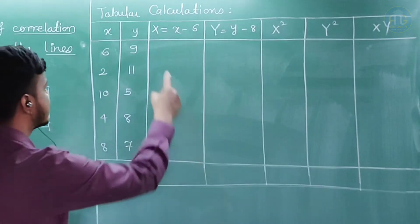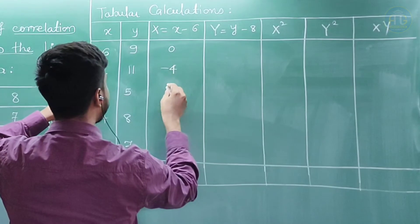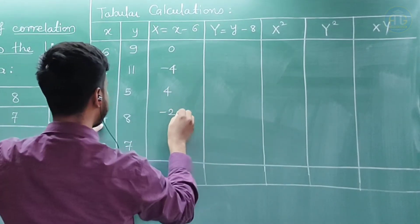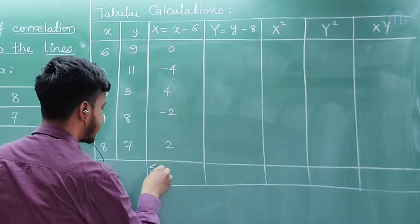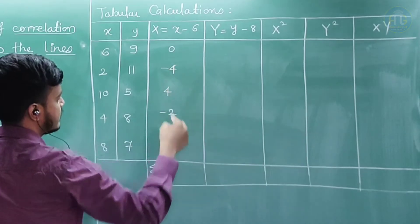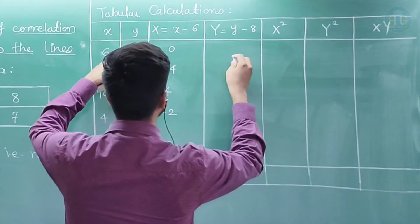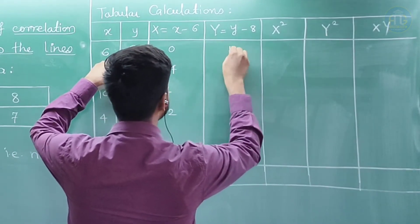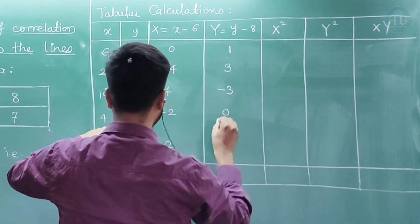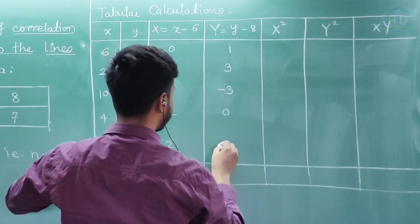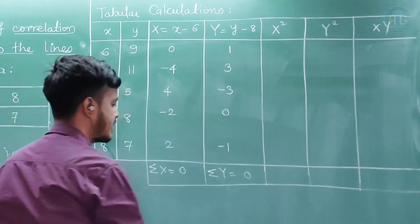Now computing X = x minus 6: 6 minus 6 is 0, 2 minus 6 is minus 4, 10 minus 6 is plus 4, 4 minus 6 is minus 2, 8 minus 6 is 2. Summation capital X equals 0. For Y = y minus 8: 9 minus 8 is 1, 11 minus 8 is 3, 5 minus 8 is minus 3, 8 minus 8 is 0, and 7 minus 8 is minus 1. Summation Y is also equal to 0.